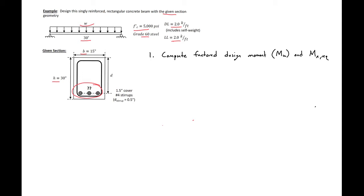The first thing that we need to do is compute our factored design moment, our MU and our MN required. We can start by calculating our factored distributed load. 1.2 times our distributed dead load plus 1.6 times our distributed live load, which will give us a factored distributed load of 5.6 kips per foot.